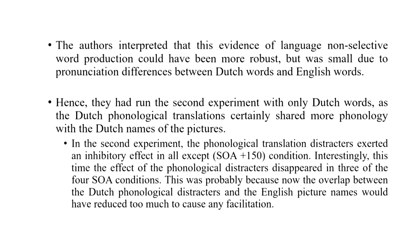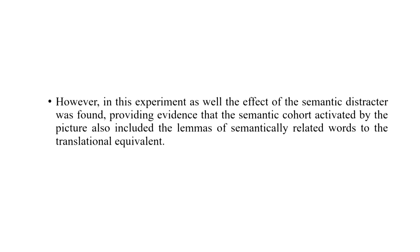In the second experiment, using only Dutch words, phonological distractors exerted an inhibitory effect except in the SOA plus 150 condition, and the effect of phonological distractors disappeared in three of the four SOA conditions — probably because the overlap between Dutch phonological distractors and the pictures to be named in English was even lower. However, the effect of the semantic distractor was still found, providing evidence that the semantic cohort activated by the picture also included lemmas from the participants' L1 — the translational equivalents in Dutch.